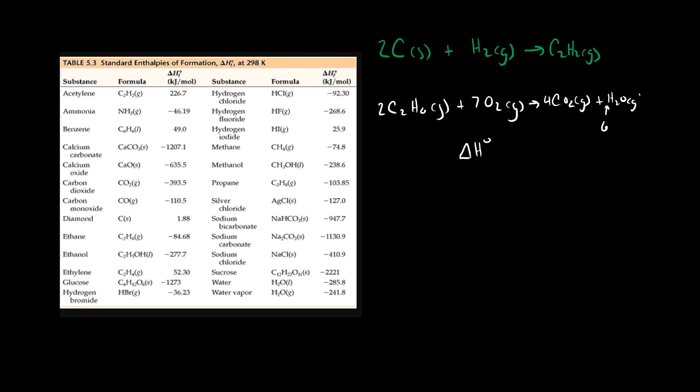The way this works is if you add up the enthalpies of formation of products and you add up the enthalpy of formation of reactants and you subtract them, that's going to be the enthalpy of this reaction.